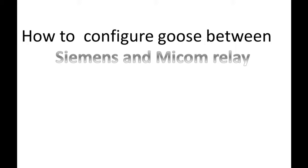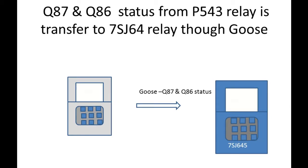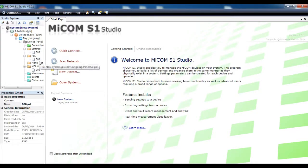Here we are going to see how to do GOOSE between Micom and Siemens relay. This is the SLD from this. The line isolator and earth isolator is taken to Micom P543. And we are using another BCU relay which is a Siemens. For that BCU relay, the isolator status is required. For that I am going to take a signal from Micom to Siemens through GOOSE for these two isolator statuses.